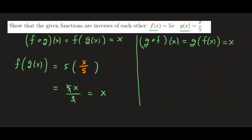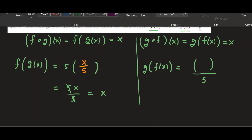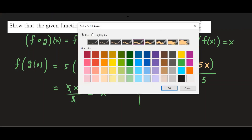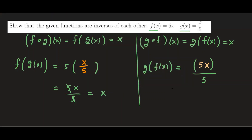Now let's do the second composition: g of f of x. We take the function f of x, which is five x, and plug it into g. g is going to do x over five, so we replace x with five x. So we have five x over five. Again, the five cancels out and we have x. Both compositions give us x, which means f and g are inverses of each other.